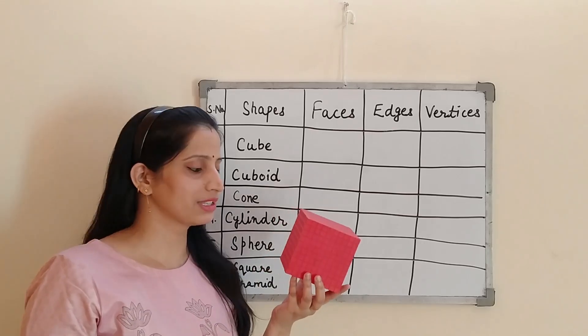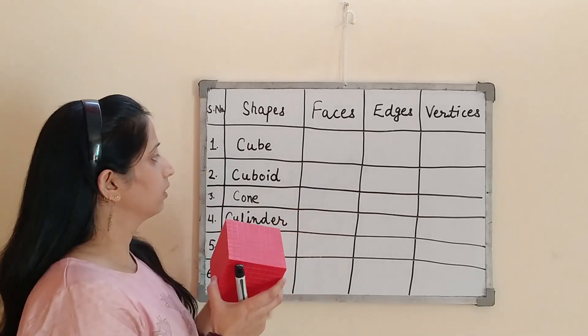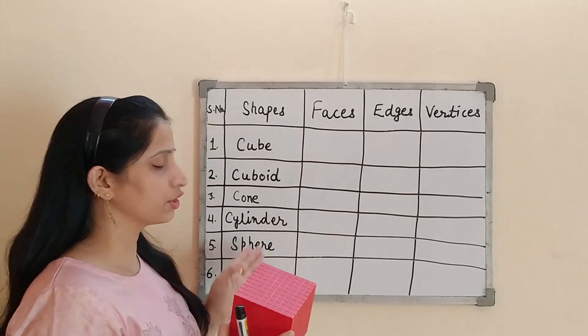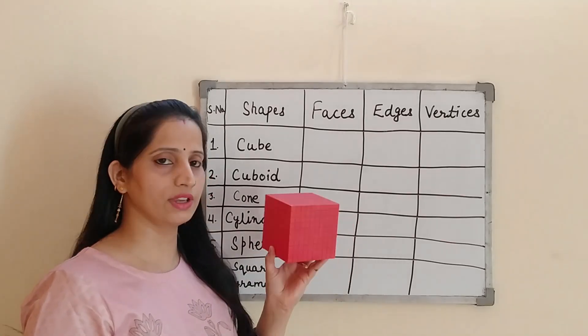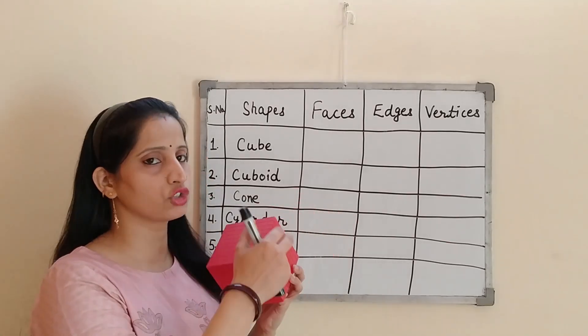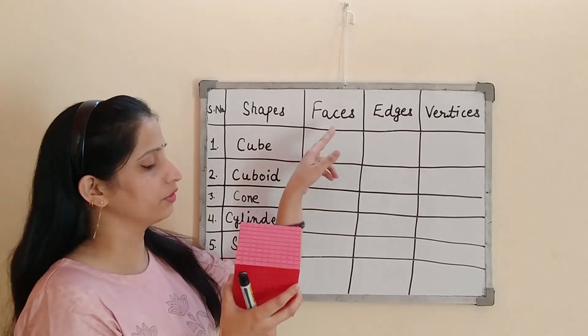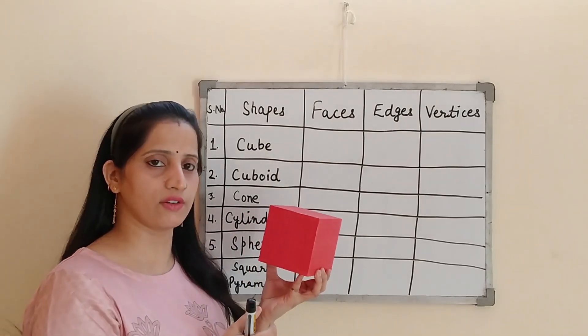So now first I am going to start with cube. See, I have already written the name of the shapes here. This is a cube. A cube is having all the faces are square in shape. Now we will discuss about the faces. How many faces a cube is having? Let's count.